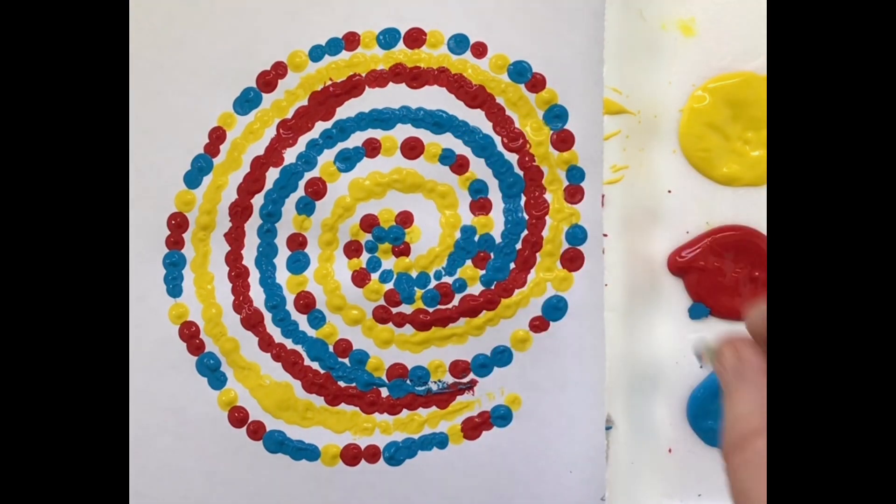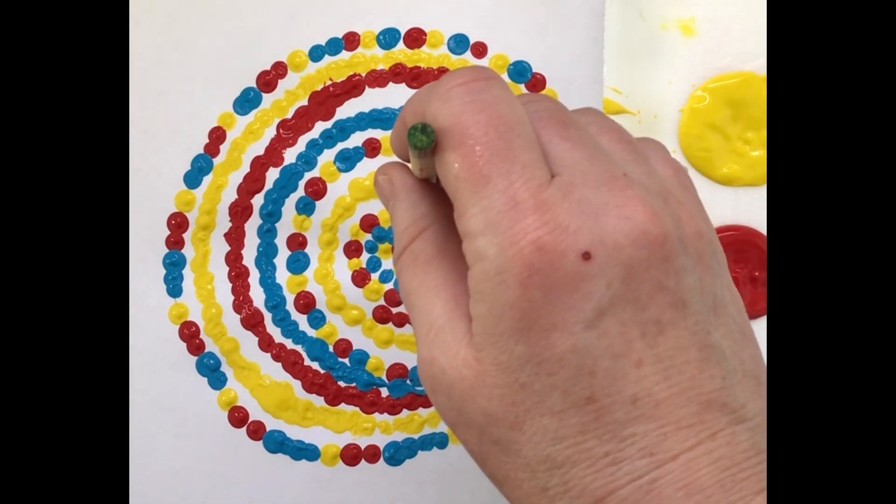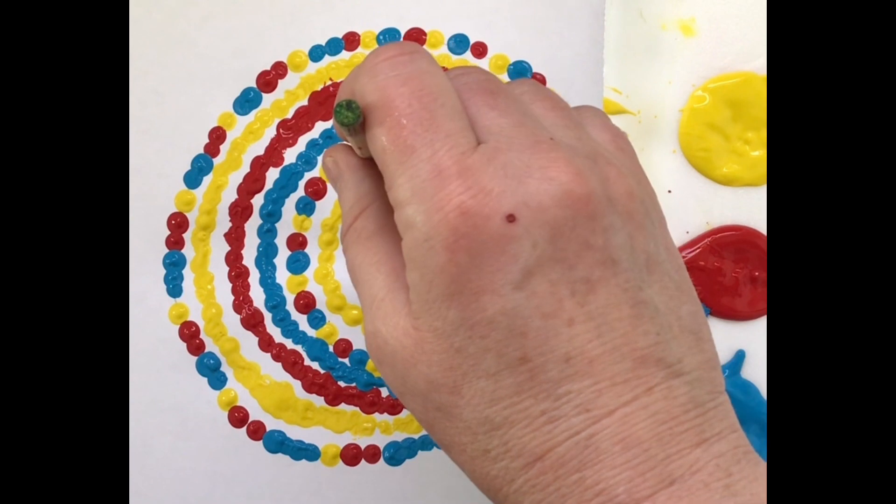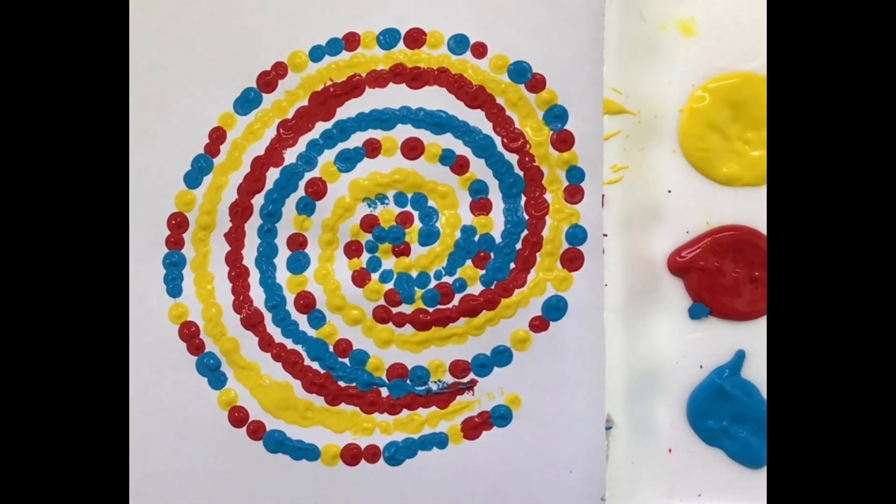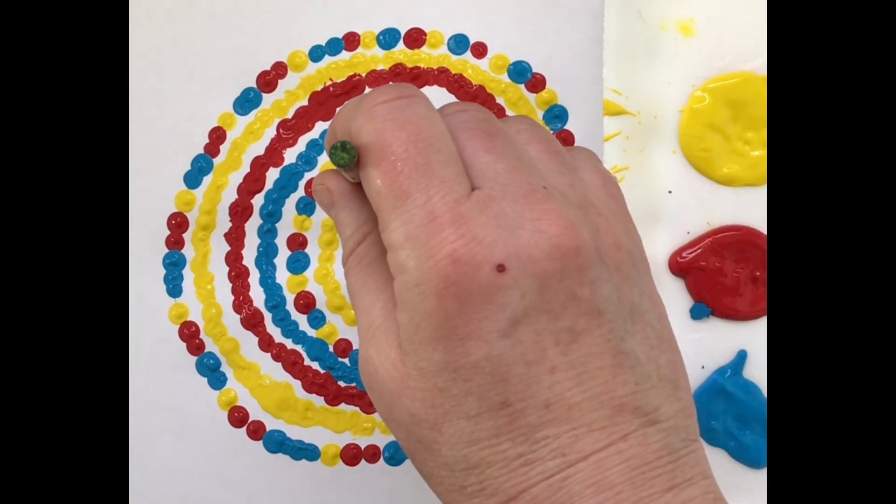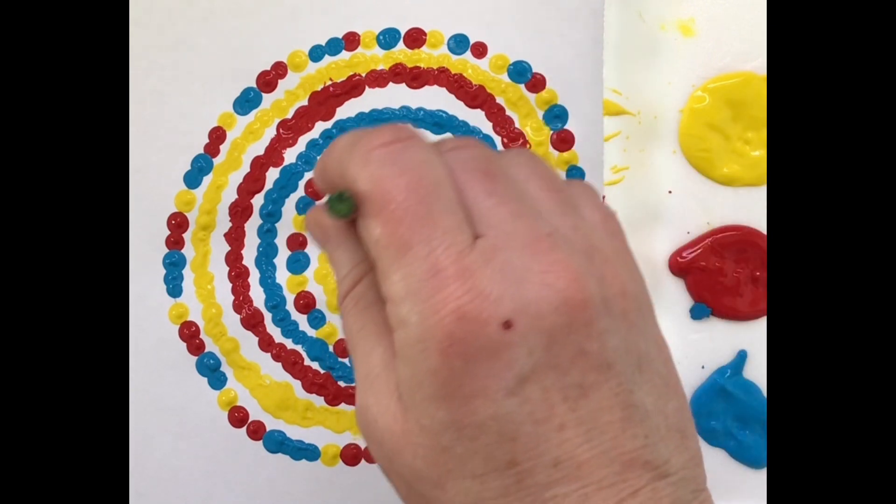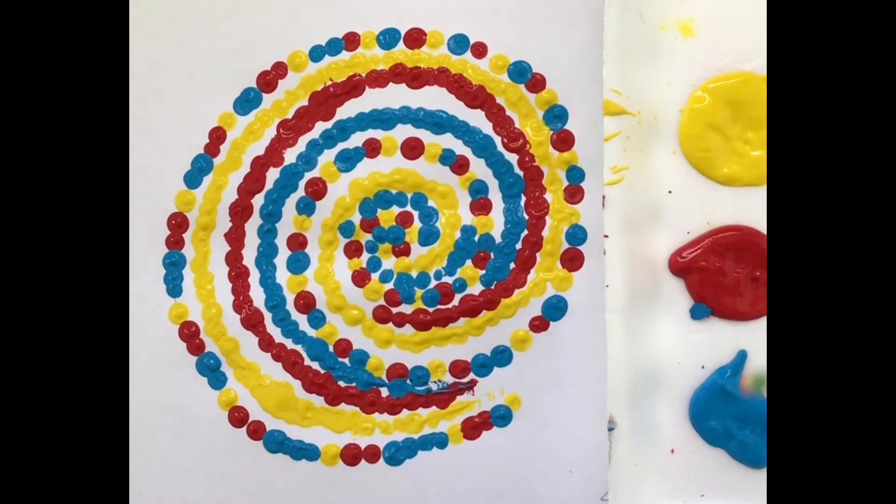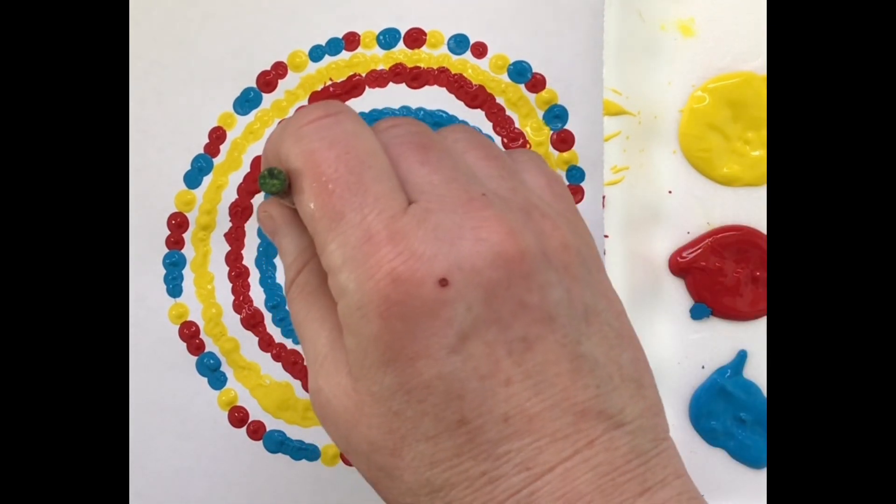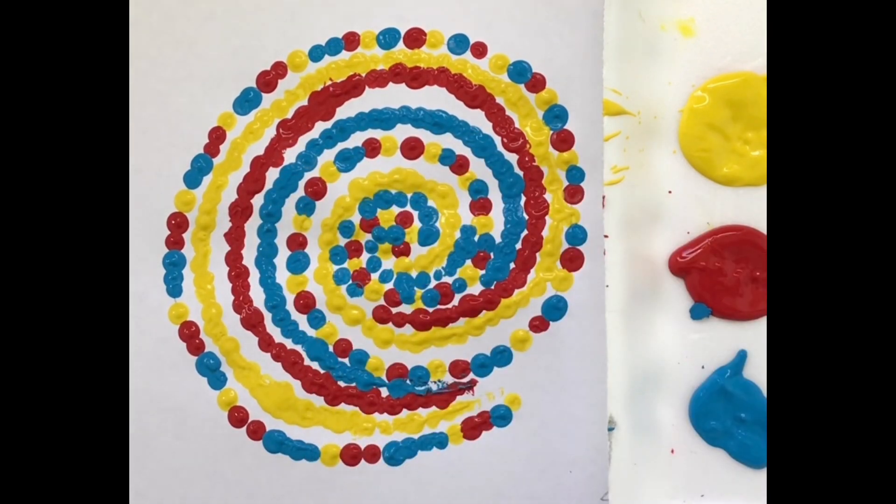And I hope you tune in, like, and subscribe to my YouTube channel. So today we're using primary colors: red, yellow, and blue. And this is tempera paint on paper. Take care.